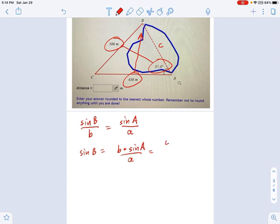I know little b is 438. If you look at the picture, that's the side opposite angle b. And sine of angle a, that is sine of 37.4 degrees. And then what do we have left? Little a. That is 506, according to our picture. Okay, so just plug that into your calculator. 438 sine of 37.4 divided by 506 equals... I get sine of angle b equals 0.52575 and so on.